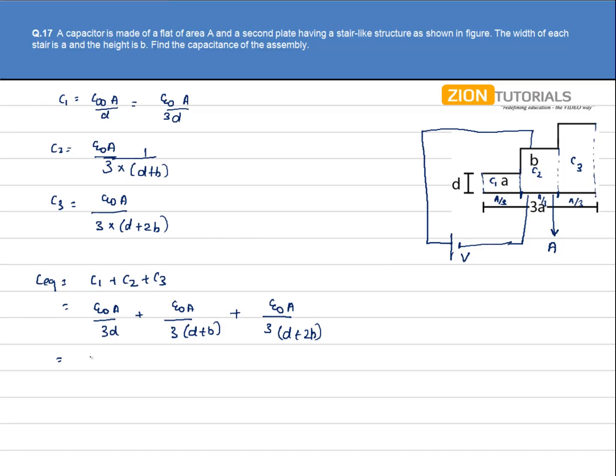On solving this equation we have ε₀A/3D into 3D² plus 6BD plus 2B² divided by (D+B)(D+2B).